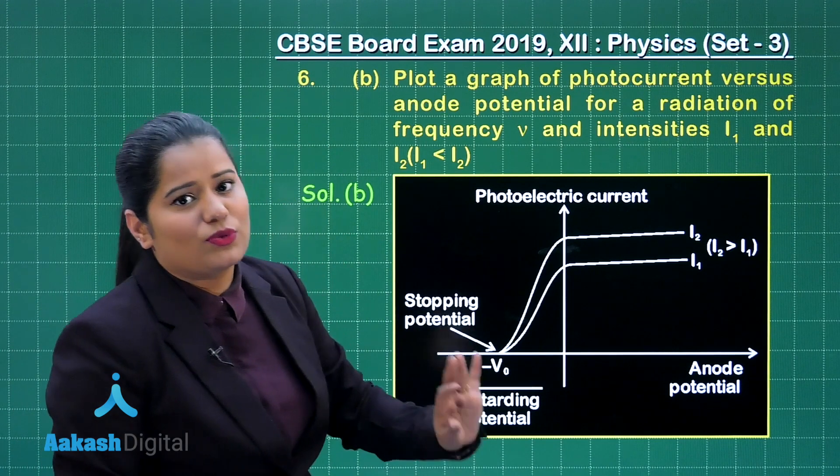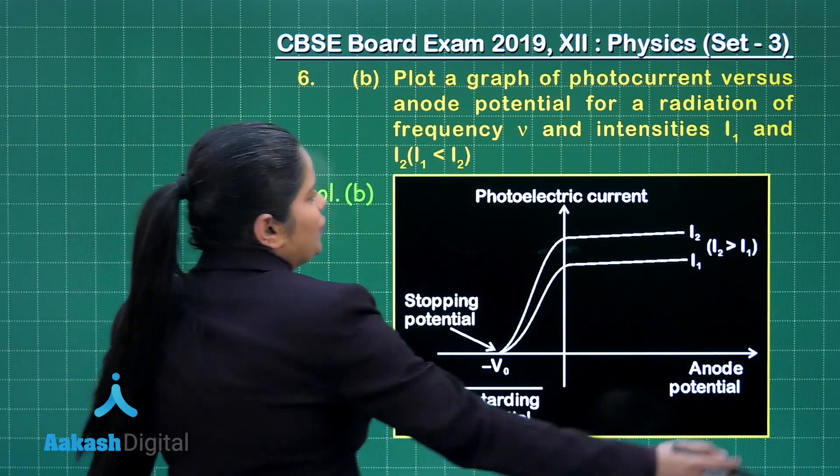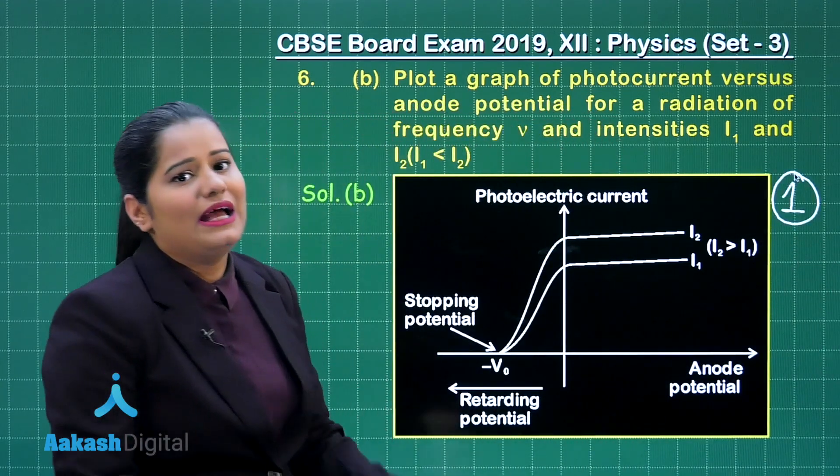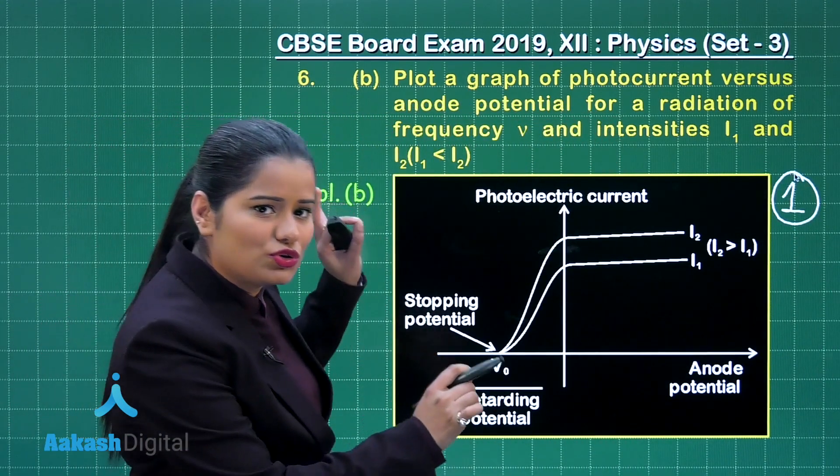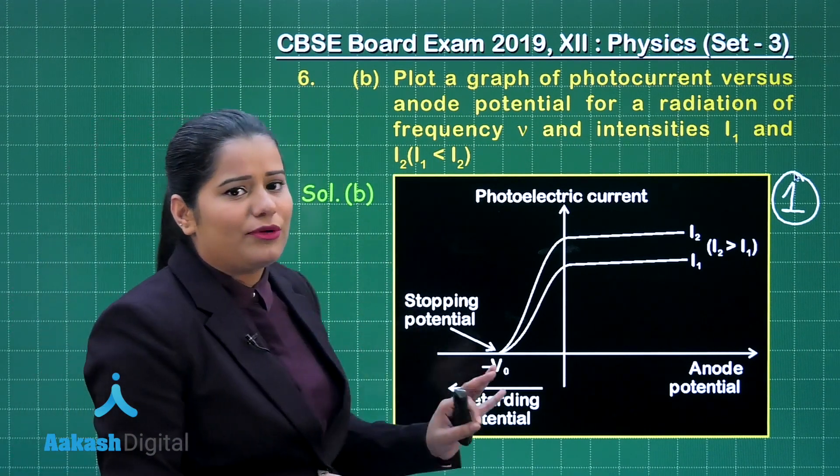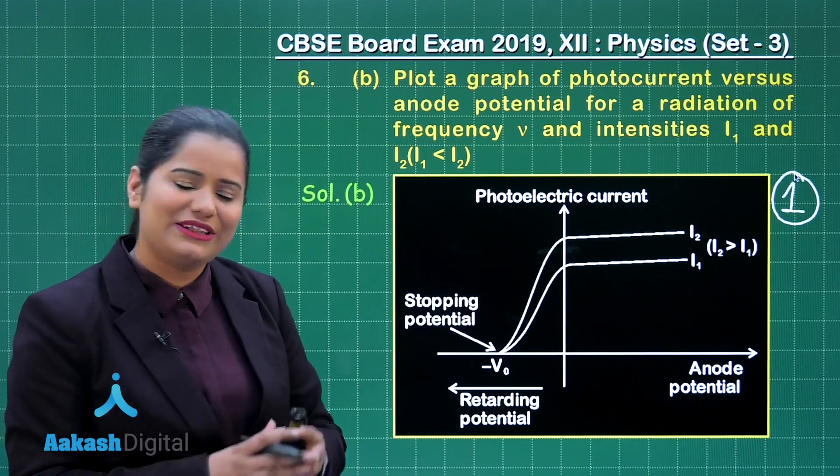So this was the graph which was expected from you to draw. So if you have drawn it right, you are going to get one mark for this part also and this is how you are going to score two marks for this particular question. I hope the marking scheme of this question is also very clear to you. Now let us move on to the discussion for the next question.